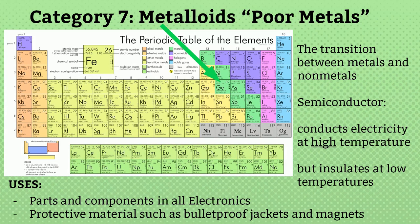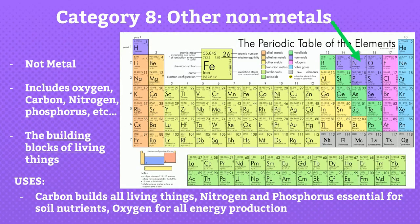Category 7: they are called metalloids. They are shown in green color on the periodic table and are in between metals and non-metals. They are also called semiconductors, meaning they conduct electricity at high temperatures but insulate at low temperatures. They are used in electronics for making parts and components, and also in protective materials such as bulletproof jackets and magnets.